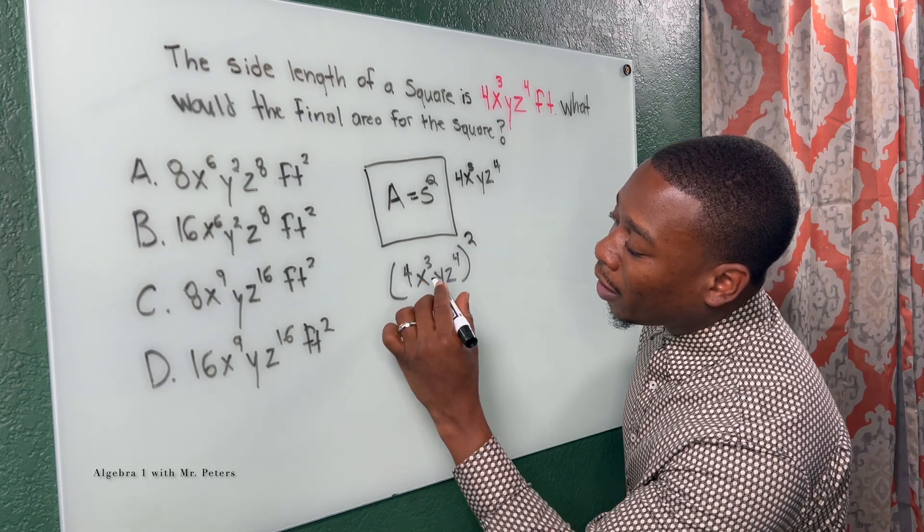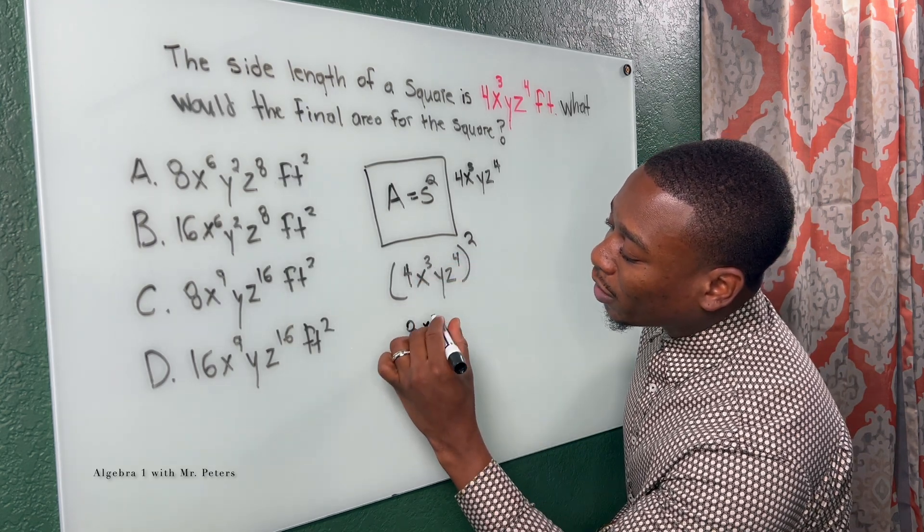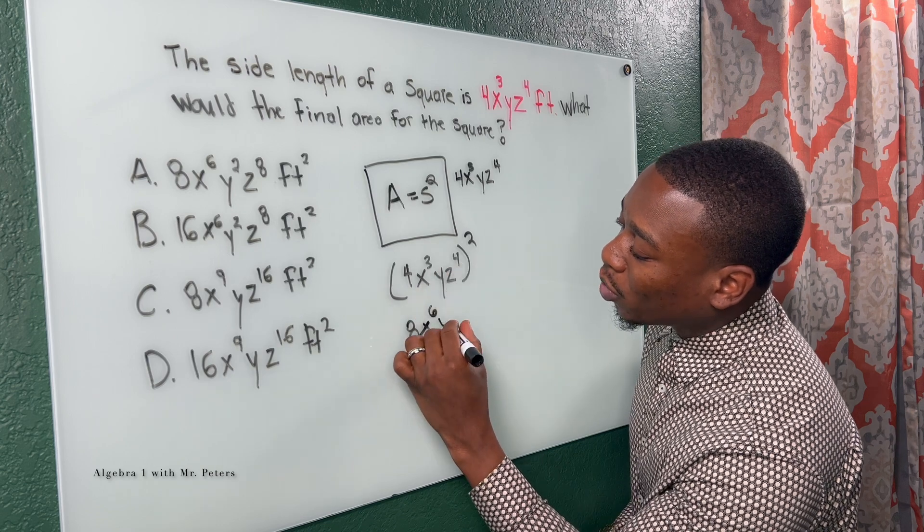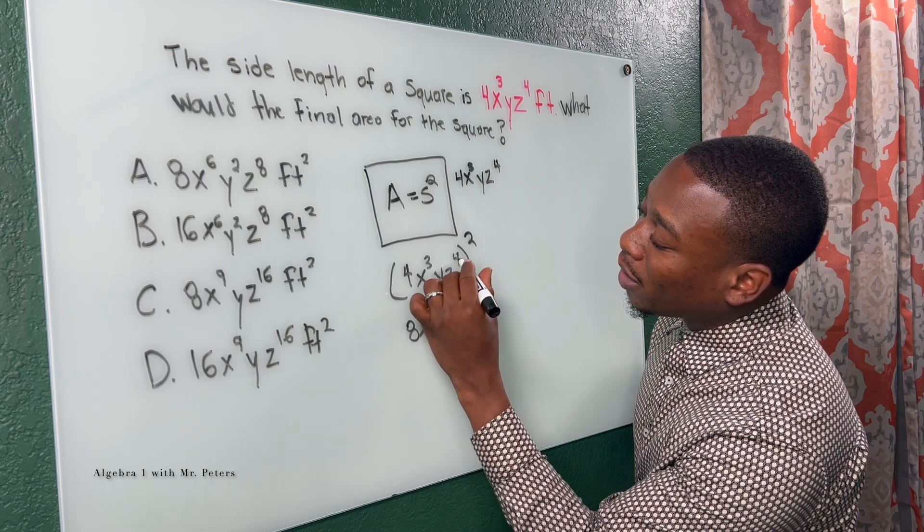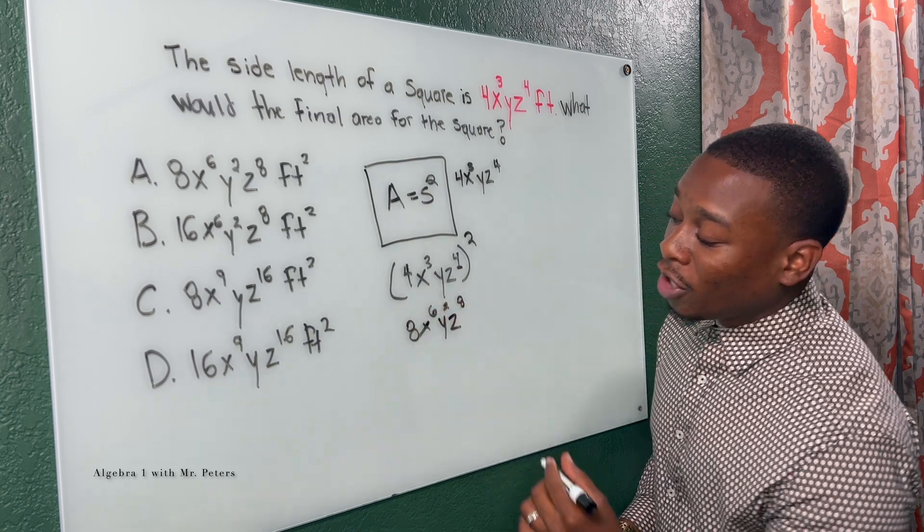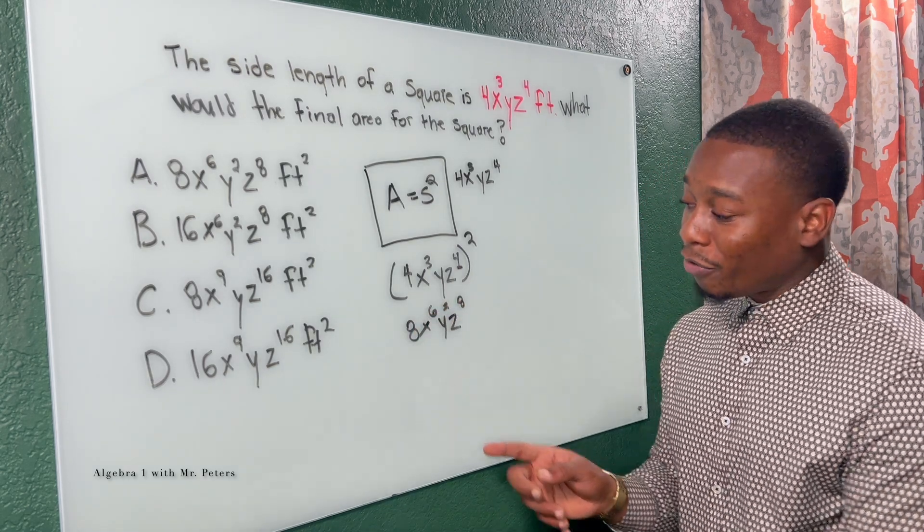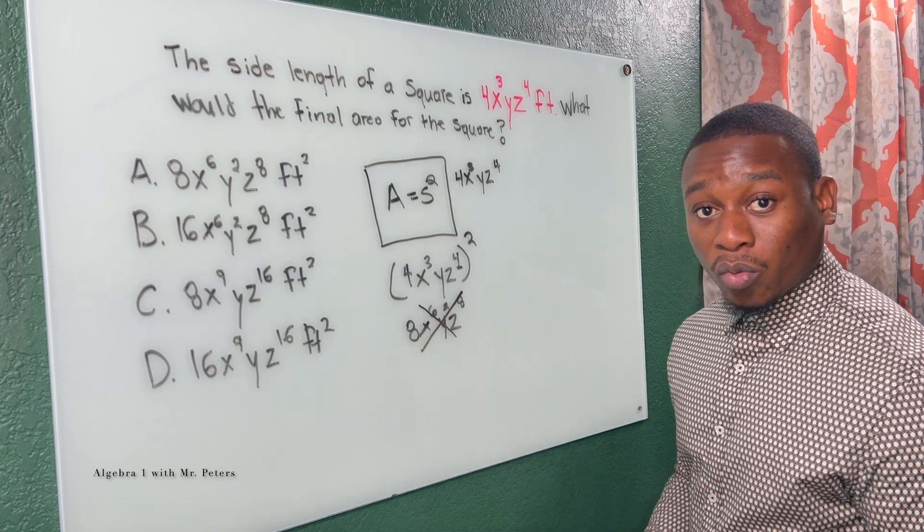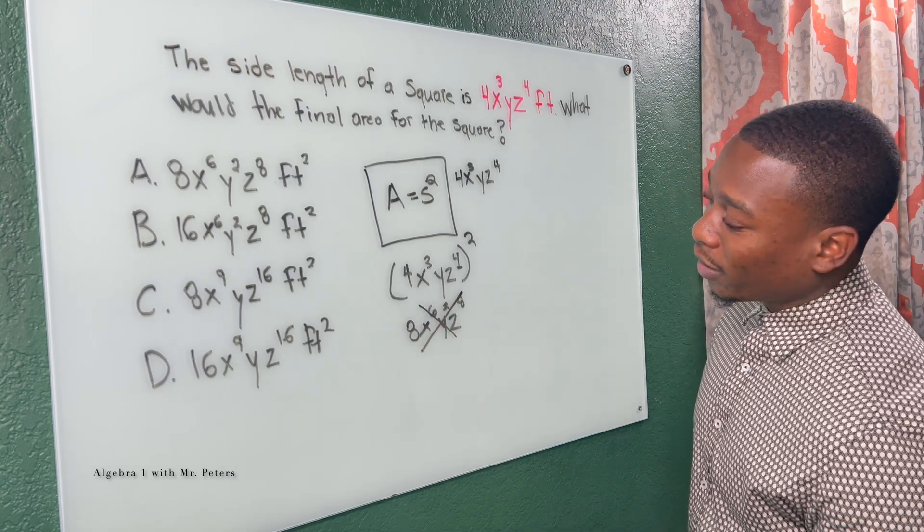So four times two is eight, three times two is X to the sixth, one times two is Y squared, and Z to the fourth times two is Z to the eighth. So you could easily get this answer, but family, that is wrong. That is not the correct answer.